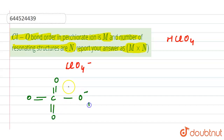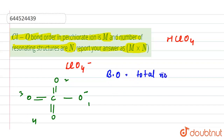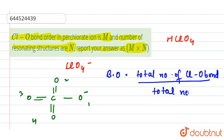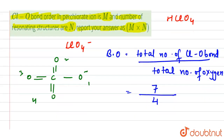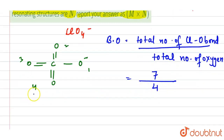We can number the oxygens one, two, three, and four. Now if we find the bond order, that is equal to the total number of CLO bonds divided by the total number of oxygens. The total number of oxygens is four, and the total number of CLO bonds is seven. So the bond order is 7/4.